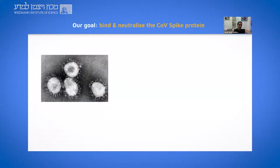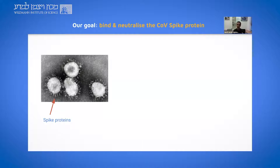Many of you have probably seen these haunting images of the coronavirus. The name 'corona' actually derives from the way these viruses look — you can see these spikes on the periphery of the virus, these spike proteins. These are viral proteins, and they're the main villain in this story. Through these spike proteins, the virus can invade the cells that line our lungs. Our attempt here is: can we neutralize, can we bind and neutralize these spike proteins? These images are much too coarse to get any physical sense of what these spike proteins actually look like.